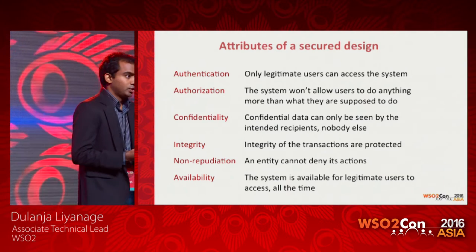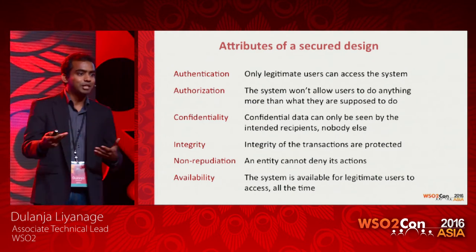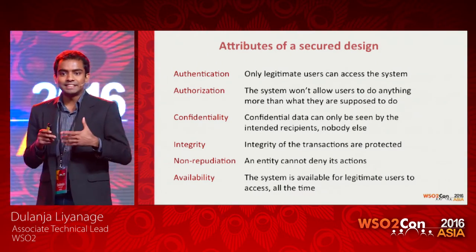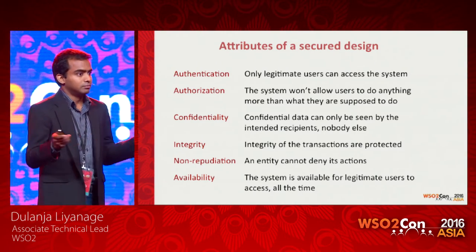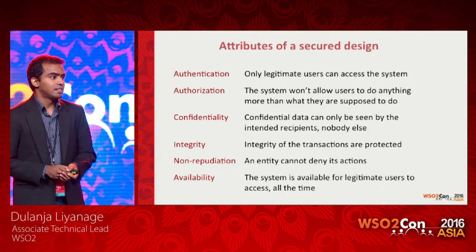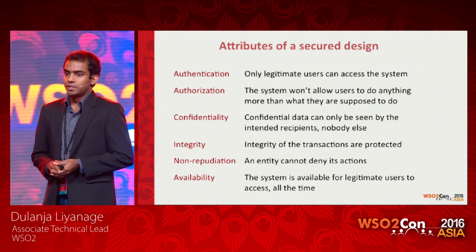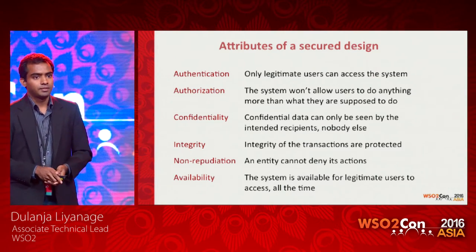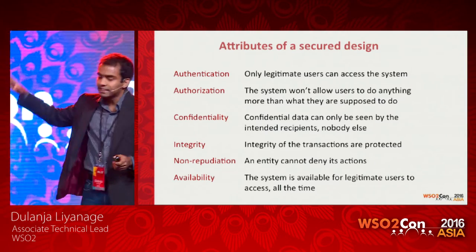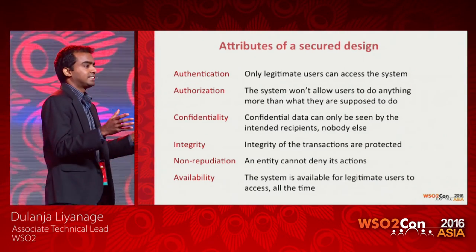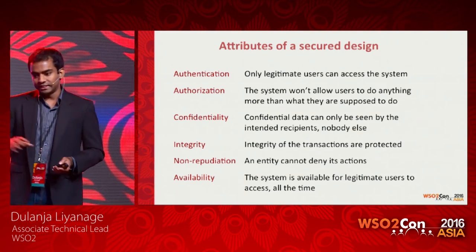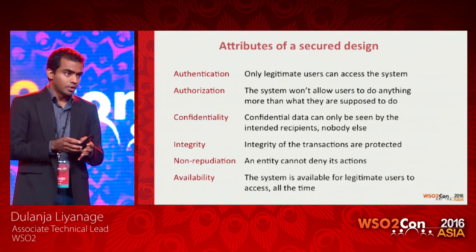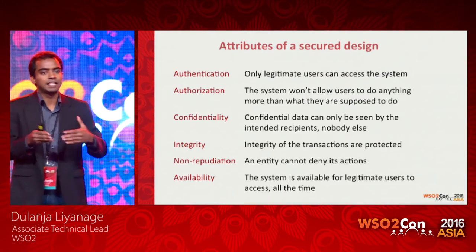Then integrity — data should not be tampered with in the communication channel; integrity should be protected. Then non-repudiation — someone can't send a request to an API and then claim they didn't send it. Finally, availability — all users should be able to access your APIs at all given times. If your API has these six key attributes, then we can say that's a secured API.